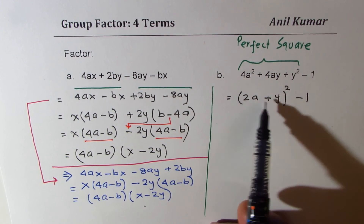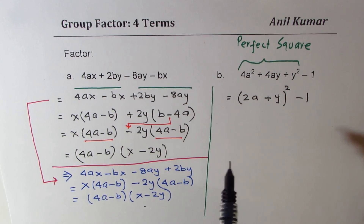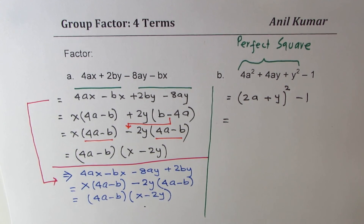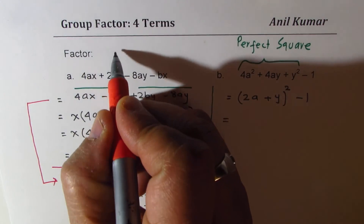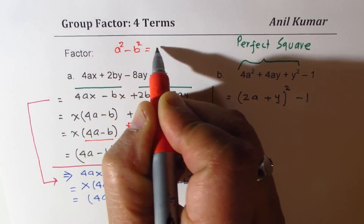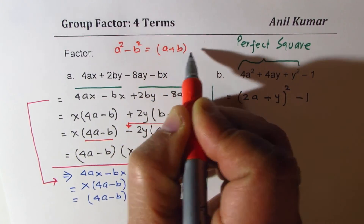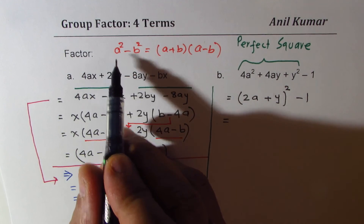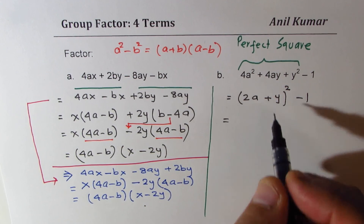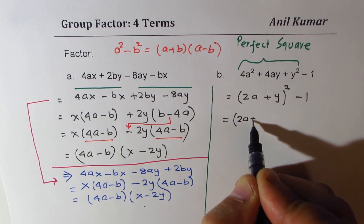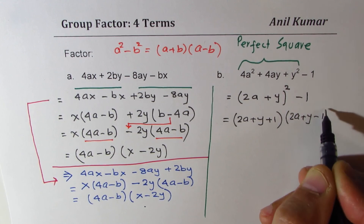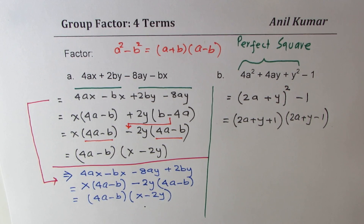Expanding gives 4a squared plus 4ay, which is 2 times a times b, and then y squared. Now we have a difference of squares. Using the identity a squared minus b squared equals a plus b times a minus b, the first term is 2a plus y and the second term is 1. So the expression factors as 2a plus y plus 1, times 2a plus y minus 1. That is the factored form.